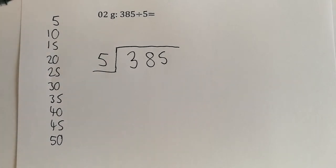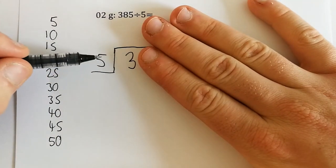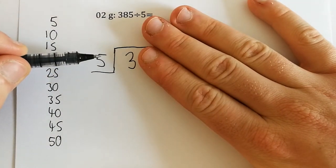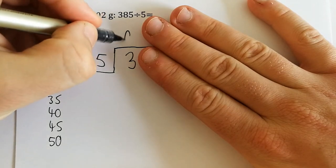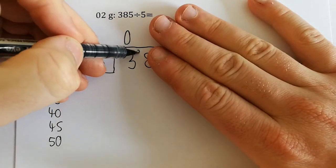And then we look at our very first number, 3. So 3 divided by 5, we can't do. So we put a 0 up here, and we think, OK, we haven't used any of our 3 up, so our 3 can go up here.